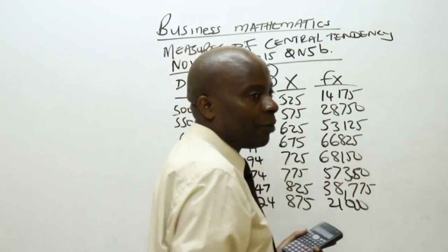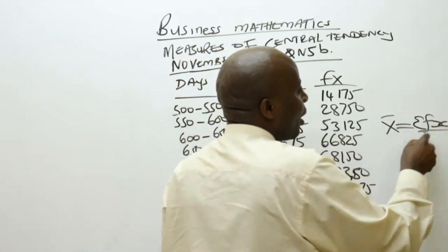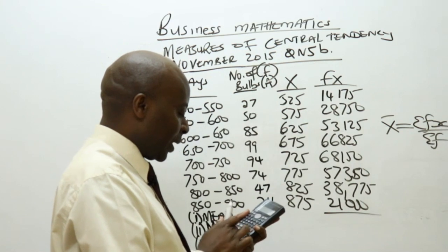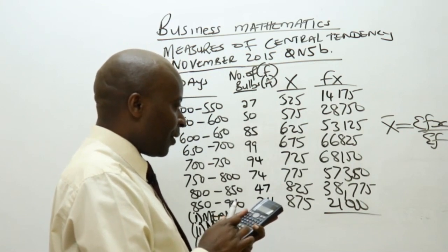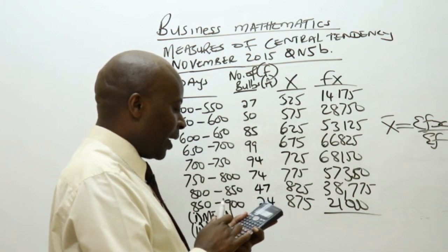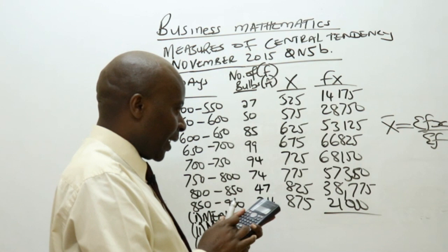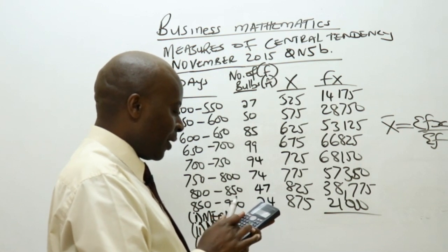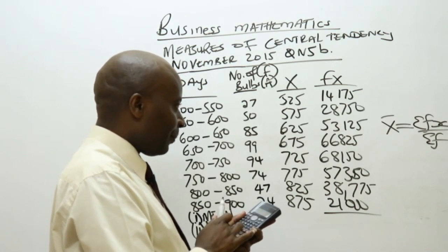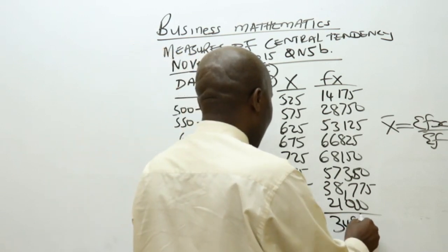Remember our formula for x-bar: x-bar, the mean, is the summation of fx divided by the summation of f. Adding the fx column: 38,775 plus 57,350 plus 68,150 plus 66,825 plus 53,125 plus 28,750 plus 14,175, which gives us 348,150.